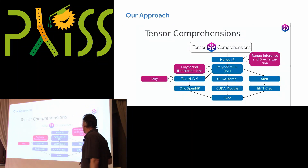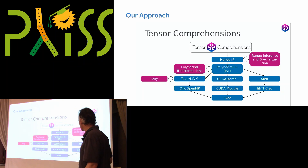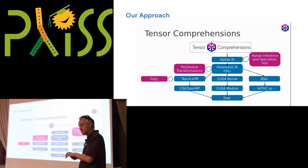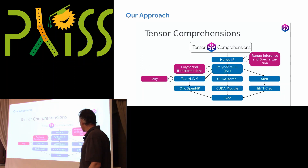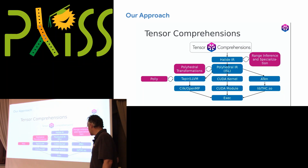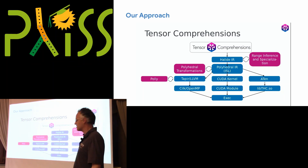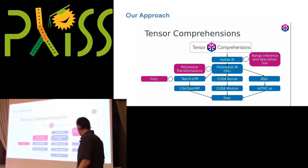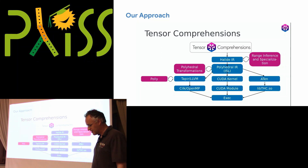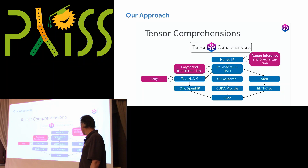This is a high-level infrastructure view. The Tensor Comprehension language gets translated into the Halide language or intermediate representation — specifically the computational denotations of Halide, not the schedules. The schedules are built using polyhedral techniques. Then we convert it into our own polyhedral intermediate representations using ISL. We loop on this several times, apply multiple scheduling algorithms, and generate CUDA loop nests and kernels. You can also generate stubs for bundling with PyTorch via the ATen tensor library API.